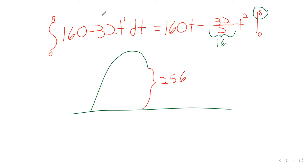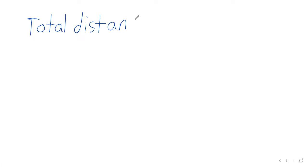Just to remind ourselves of what this means: the object is going up, the object is going down — 256 feet is not the total distance the object travels. It's the difference between where it began and where it ended up. This is slightly a detour from the net change theorem, but I think after we've said all of that, it's a perfectly natural question: what is the total distance an object travels?